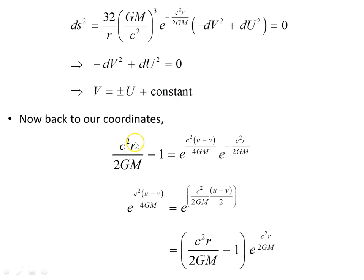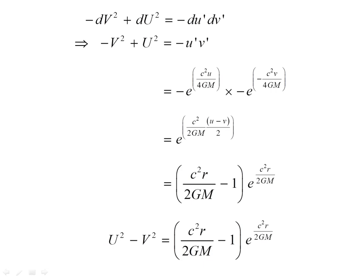The condition −dV² + dU² = 0 implies V = ±U + constant. Going back to our coordinates and tidying up, we find that U² − V² equals an expression in terms of the Schwarzschild radial coordinate R multiplied by an exponential factor. This expression U² − V² = f(R) looks like the equation of a hyperbola, with the right-hand side determined by the Schwarzschild radial coordinate R.